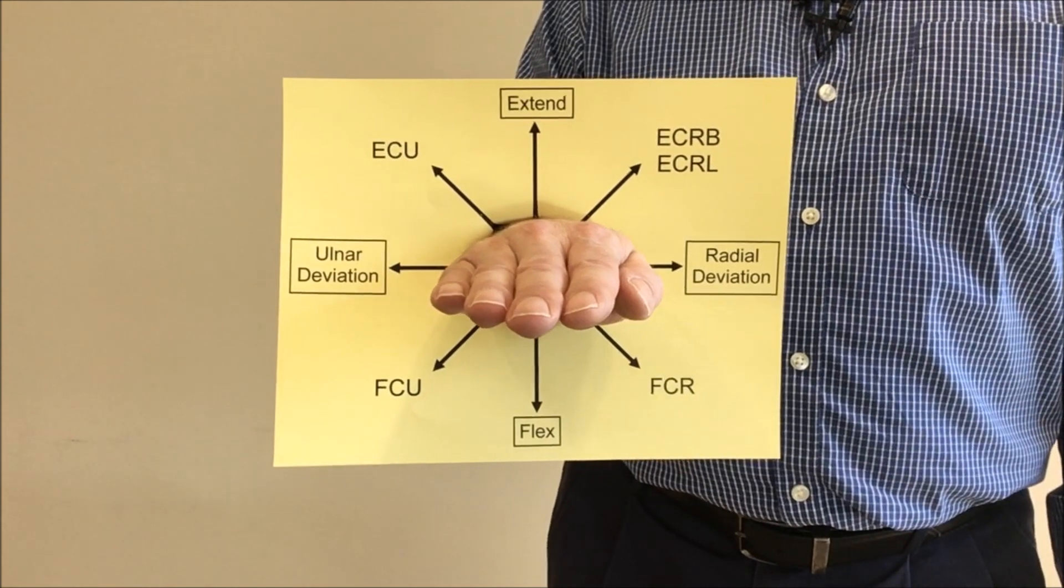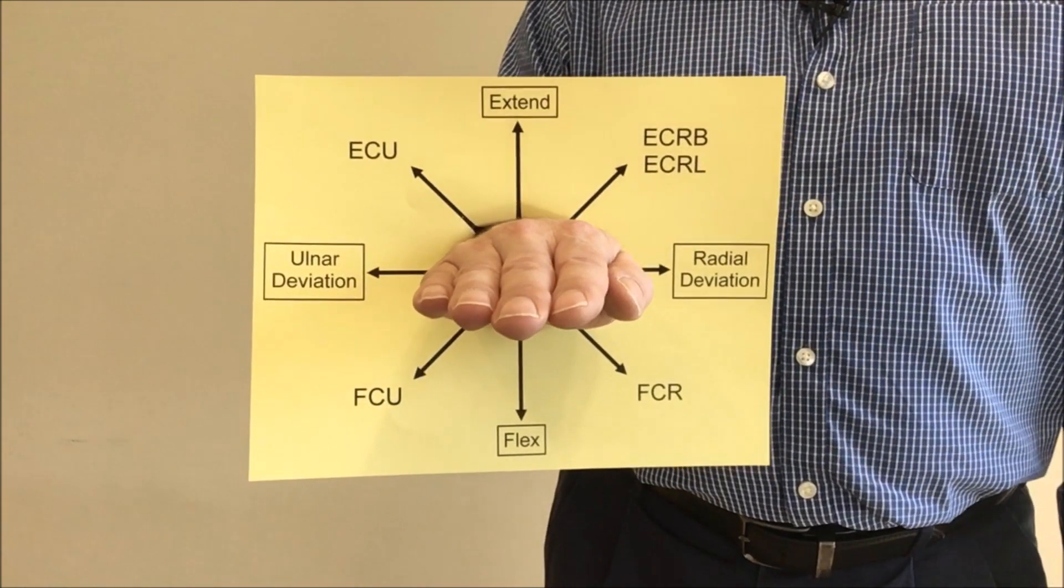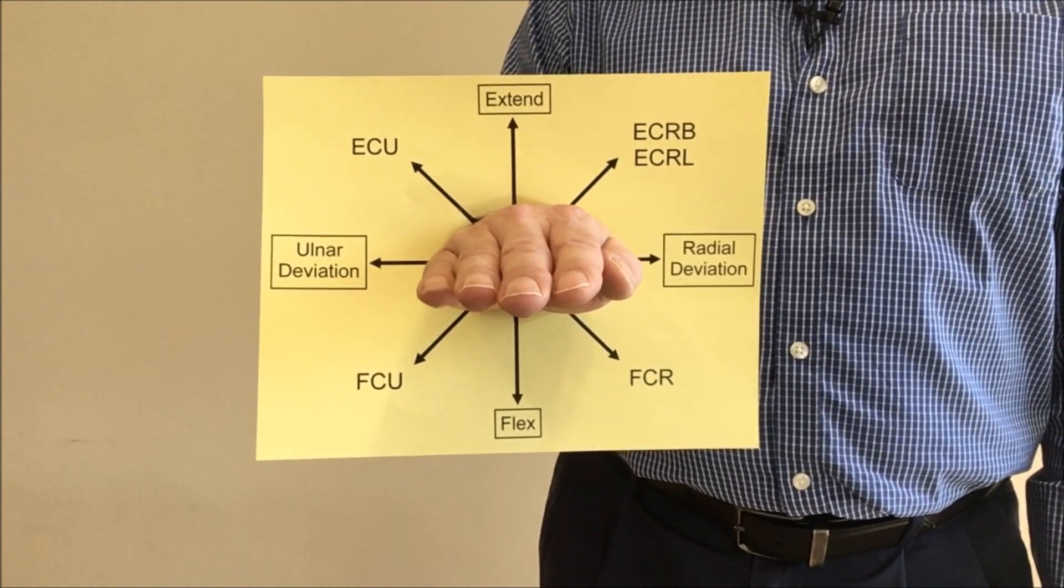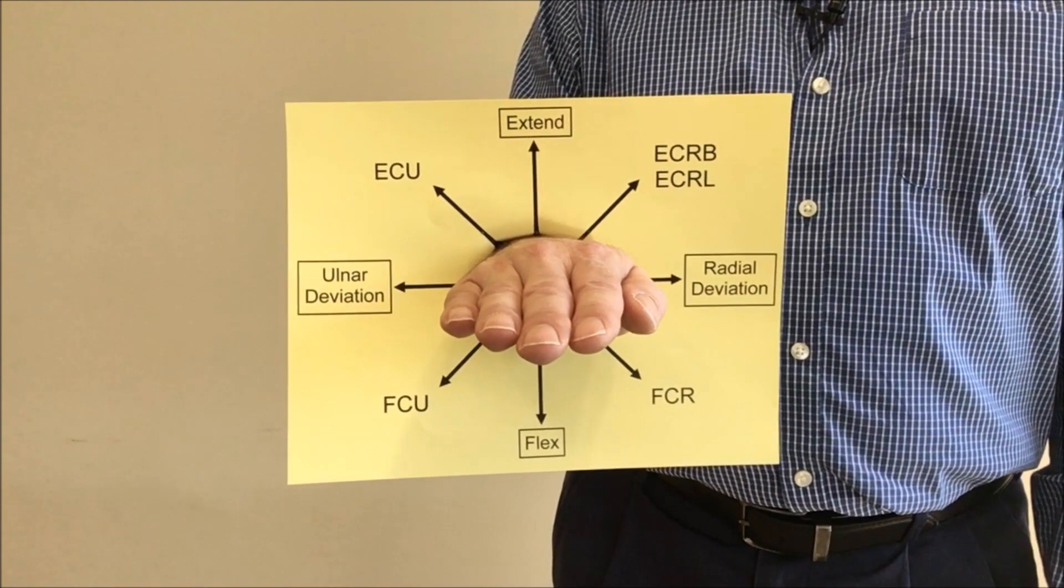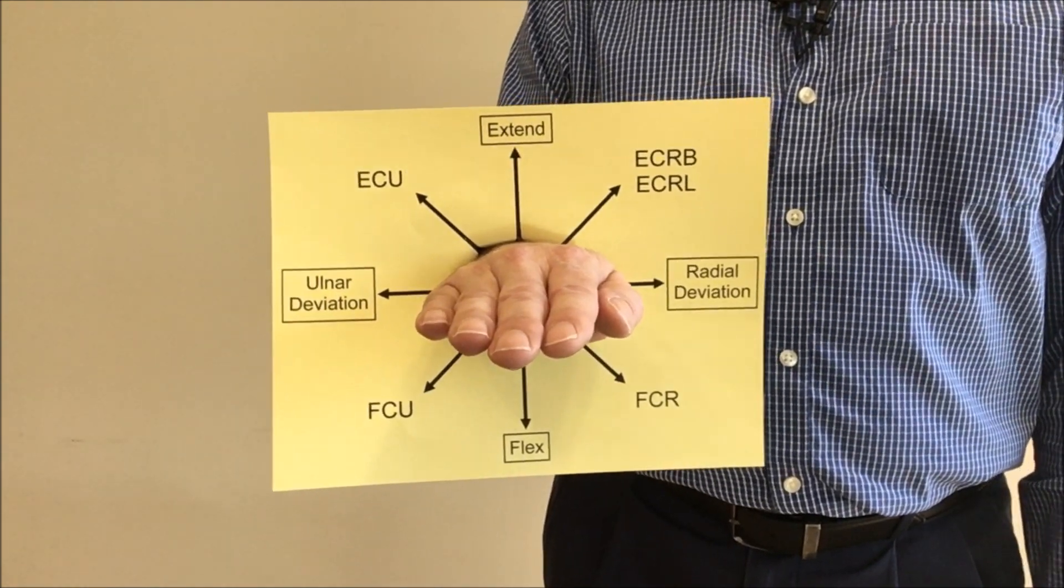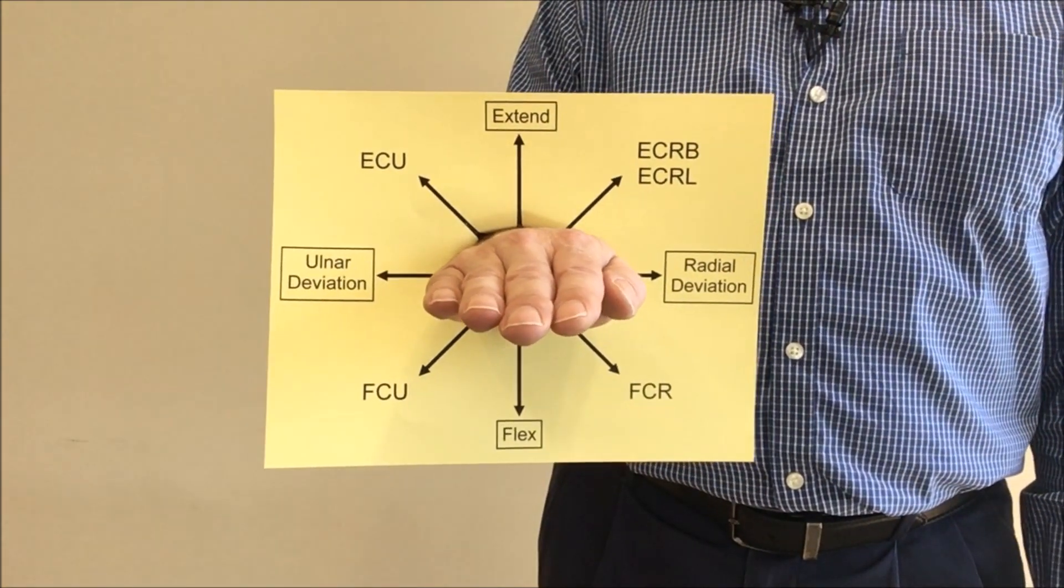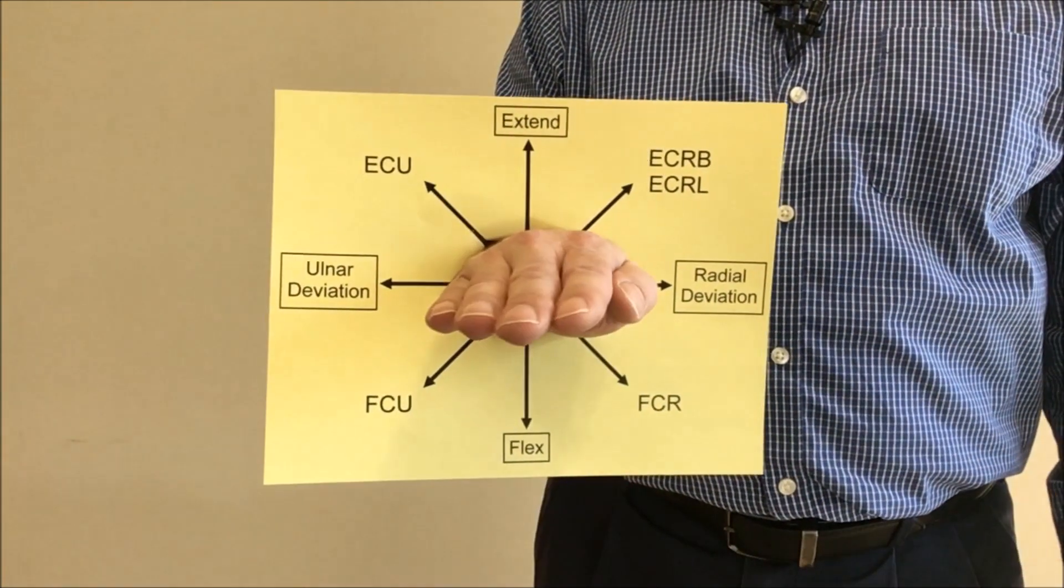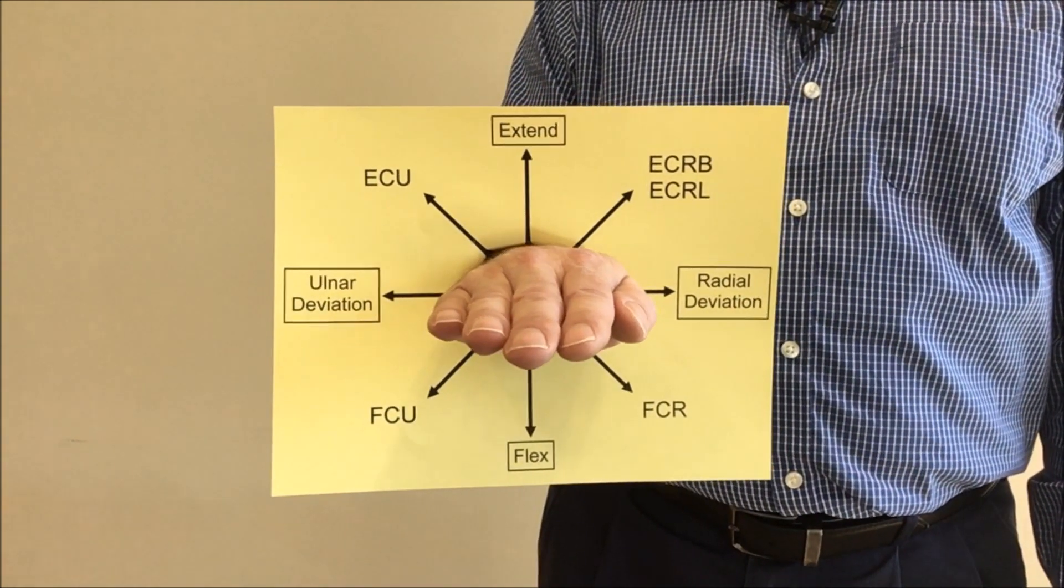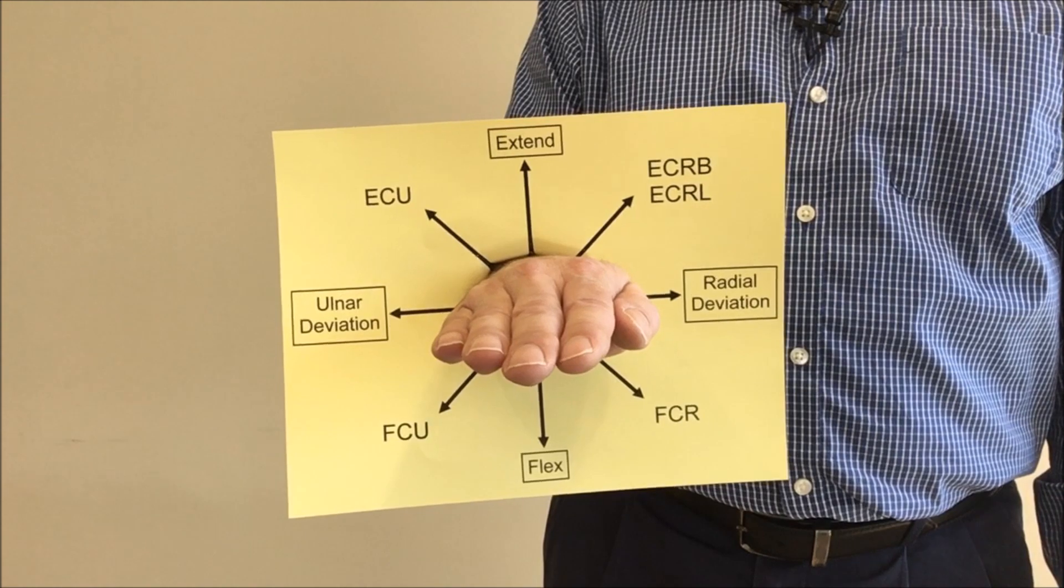So in order to make those gravity minimized we simply need to get those movements parallel to the floor. To get extensor carpi ulnaris and flexor carpi radialis parallel to the floor, if you look at their directions of pull here that I've labeled on the card, all we have to do is to rotate the forearm a little bit.